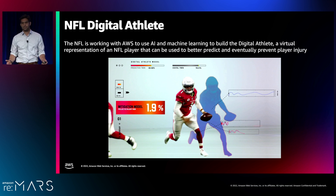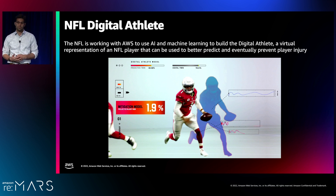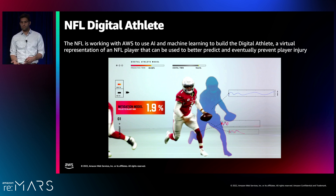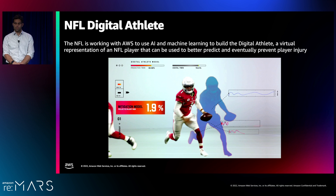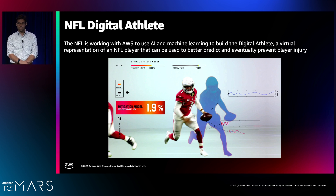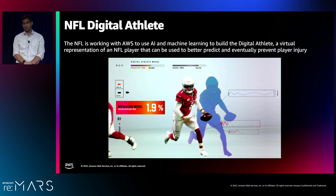So what is the digital athlete? It's a joint effort between the NFL and AWS to use AI and machine learning to build a digital representation of an NFL player. We have a lot of data about NFL athletes — from performance metrics pulled from tracking devices they wear to historic injury trends and information about plays in different scenarios. By aggregating and centralizing all this data, we're able to create models that better track player data and eventually predict scenarios where players are at high risk of injury so we can take preventative measures.